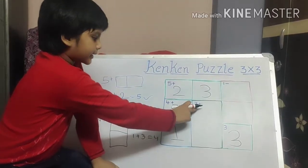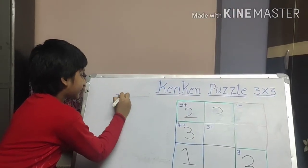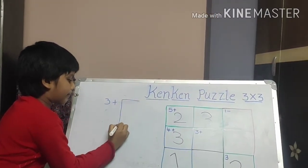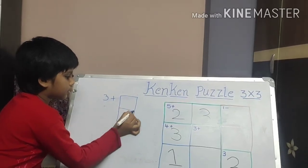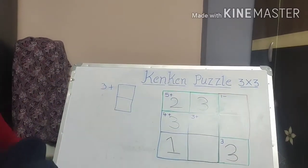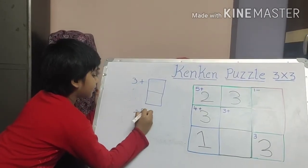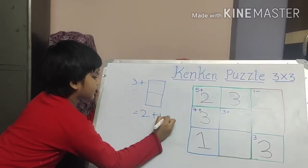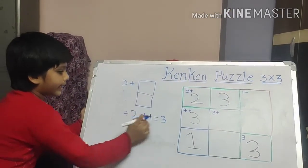If you take three plus, there are boxes like this. If you take three plus, two plus one is equal to three. Next, minus, one minus.